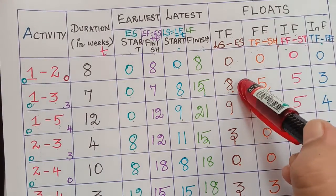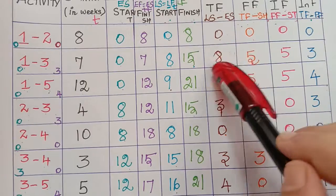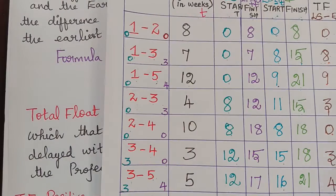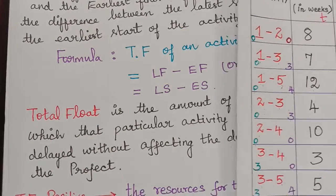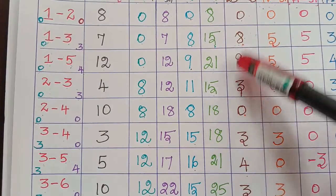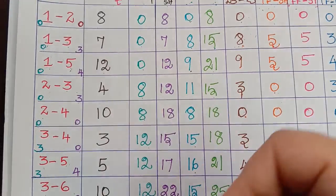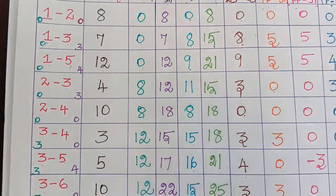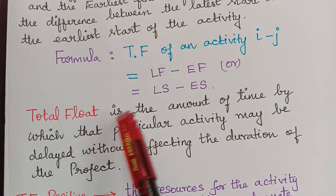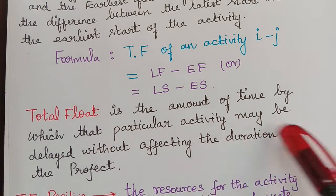For activity 1 to 3, the total float calculated was 8. These values — 0, 8, 9, 3 — are the amounts of time by which the corresponding activities may be delayed without affecting the total duration of the project. So that is known as the total float. To read the definition once more: it is the amount of time by which that particular activity may be delayed without affecting the duration of the project.